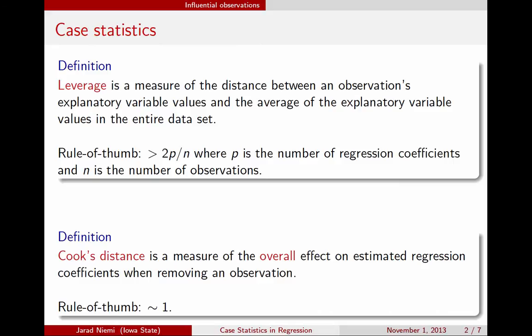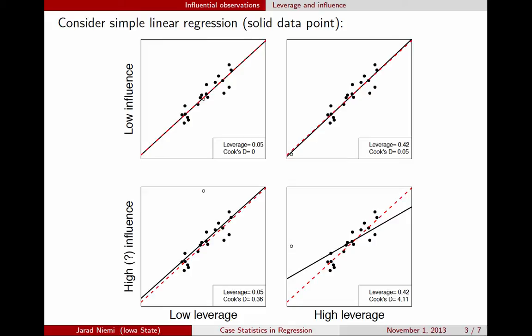Here's a visual illustration of leverage and Cook's distance with four different plots. In each plot, the response variable is on the y-axis and the explanatory variable is on the x-axis. These four plots go through the different combinations of high and low leverage and high and low Cook's distance. In each plot, the solid line is the regression line with all data points, and the red dashed line is the line when you remove the open circle data point.